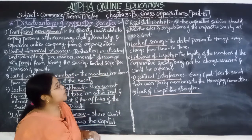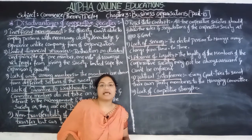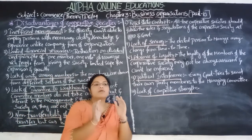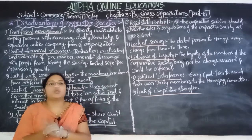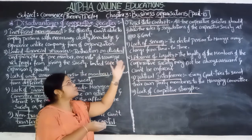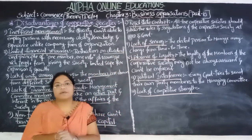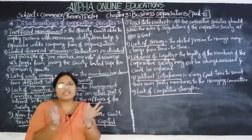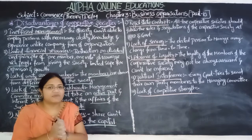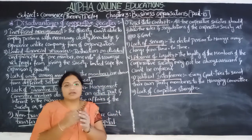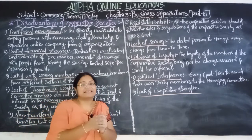The next disadvantage is rigid state control. All cooperative societies must follow the rules and regulations of the Cooperative Societies Act 1912 and the government. It is therefore very difficult for the society to function flexibly or freely, and they cannot make decisions independently as they have to work under government control.